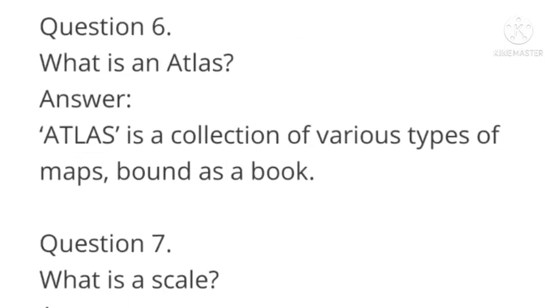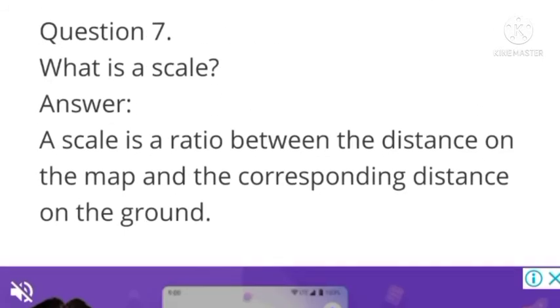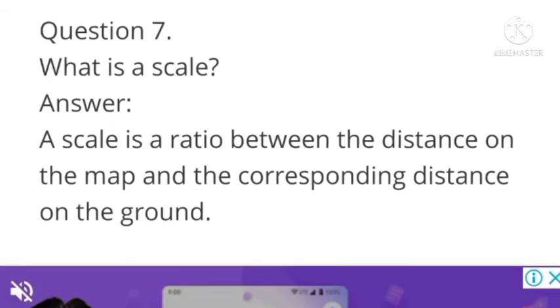Question number six: What is an atlas? Answer: Atlas is a collection of various types of maps bound as a book. Question number seven: What is the scale? Answer: A scale is a ratio between the distance on the map and the corresponding distance on the ground.